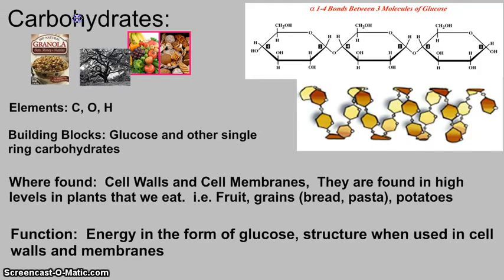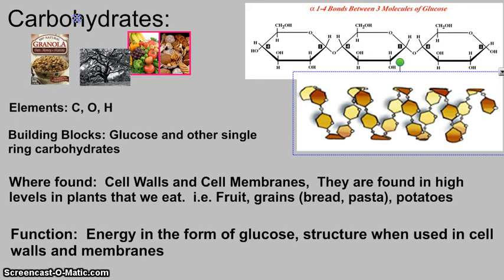First up: carbohydrates. They are made up of the elements carbon, oxygen, and hydrogen only. Their building blocks are glucose and other single-ring carbohydrates — you can identify them as a series of rings. They're found in cell walls and cell membranes, and in high levels in the plants we eat, like fruits, grains, and potatoes. Their function is to provide energy in the form of glucose and to provide structural support in cell walls and membranes.